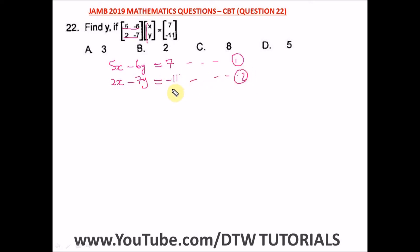From here we can use elimination method to solve the simultaneous equation. In using elimination method, we're told to find y, so let us eliminate x so we can quickly get our y. In eliminating x, what do we do? We multiply equation one by 2 and multiply equation two by 5.